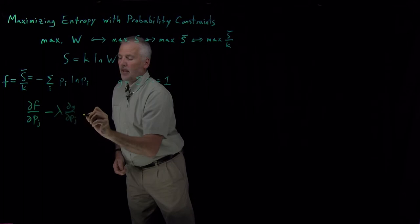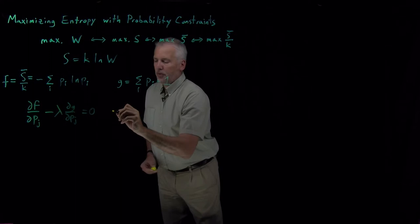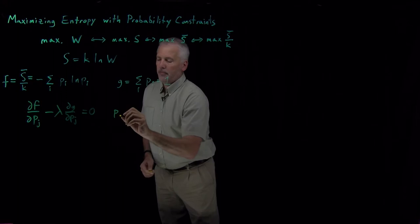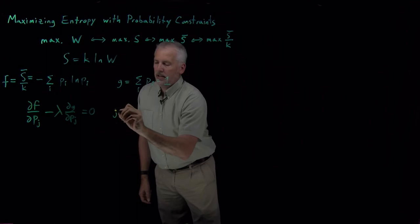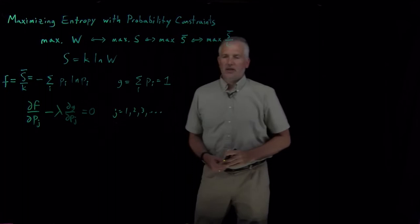And we want that to be equal to zero not just for P1 or P2, but for all of them. So what we want is j must be 1 or 2 or 3 or any of the possible states the molecule can be in.